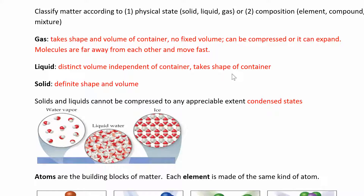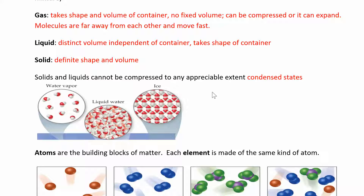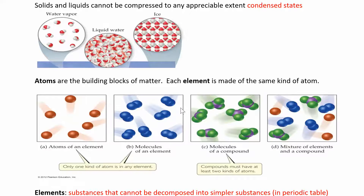Liquids have a fixed volume but their shape can change. Solids have a definite shape and a definite volume. Solids and liquids cannot be compressed to any appreciable extent — they're called condensed phases or condensed states. You can take a gas and compress it to become a liquid or a solid, but solids are about as compressed as they can get.